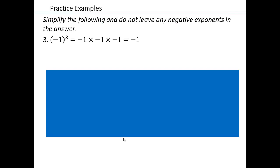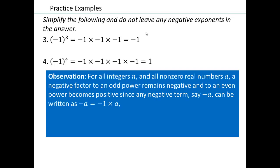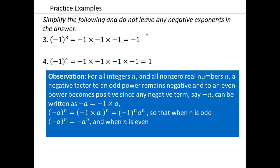Negative 1 to the third power gives you negative 1 times negative 1 times negative 1, which is negative 1. So negative 1 to an odd power gives you negative 1, and negative 1 to an even power gives you positive 1. If you have negative a, that can be written as negative 1 times a. So negative a to the power n: when n is odd, you get negative a to the power n; when n is even, you get positive a to the power n.